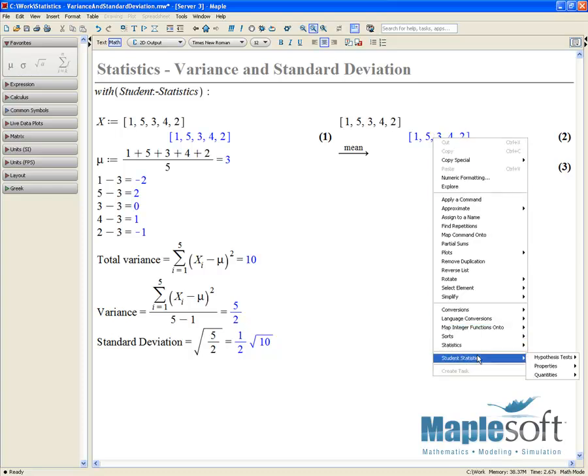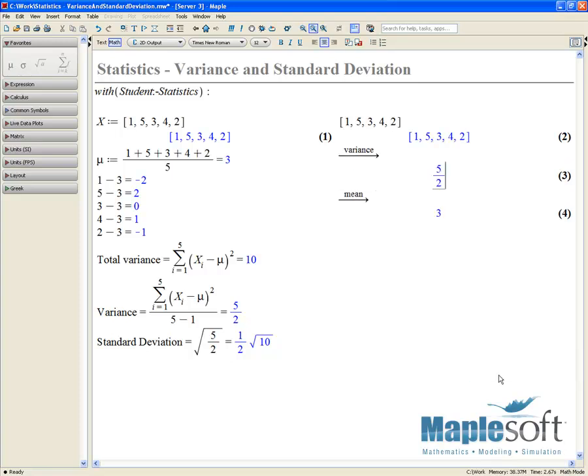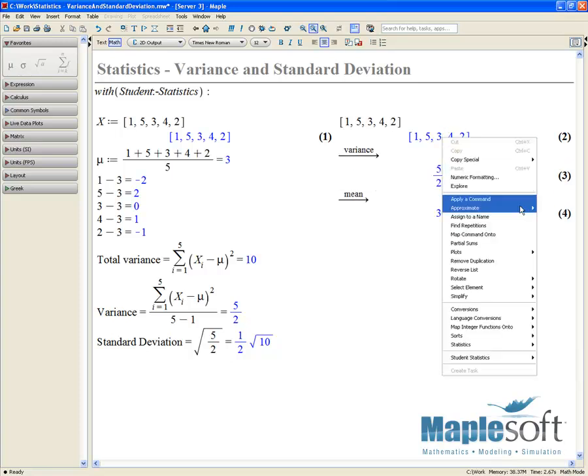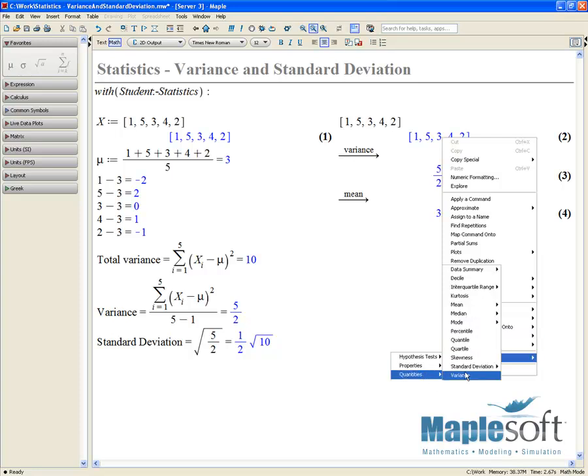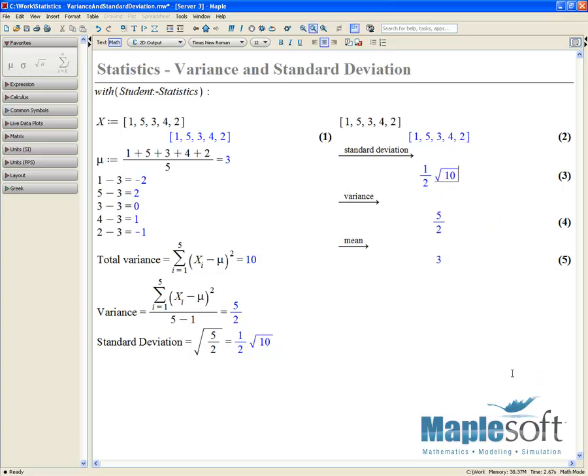Then we can go and we can find a couple of other quantities here. So we'll right click, choose quantities, find the variance, right click again, student statistics, quantities, standard deviation, and the value.